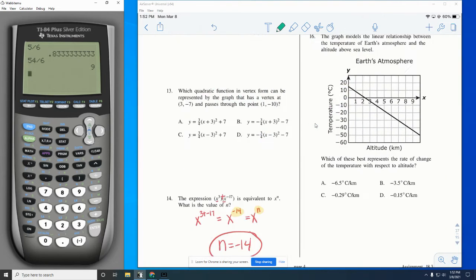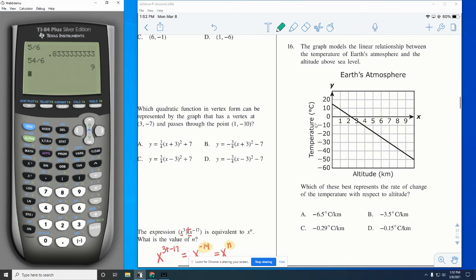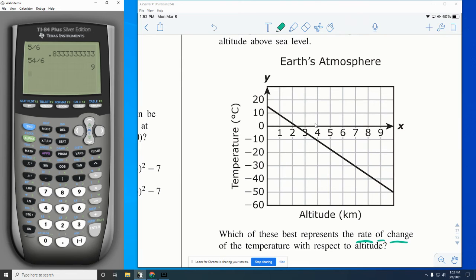Number 16. So just slide your eyes a little bit to the right. The graph models the linear relationship between the temperature of Earth's atmosphere and the altitude above sea level. Which of these best represents the rate of change of the temperature with respect to altitude? So remember, rate of change is a slope. So I'm going from point to point.